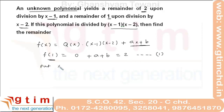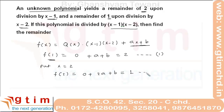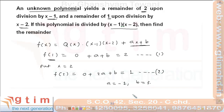Then a plus b equal to 2. Now put x equal to 2, so we get f(2) equal to 0 plus 2a plus b. The value of f(2) is the remainder when f(x) was divided by x minus 2, which is given as 1. Solving equations 1 and 2, we get a equal to minus 1 and b equal to 3.